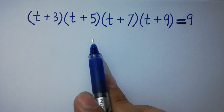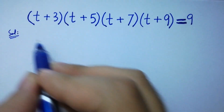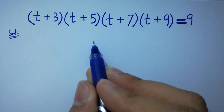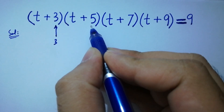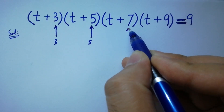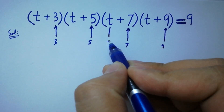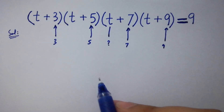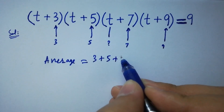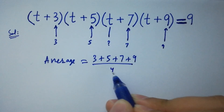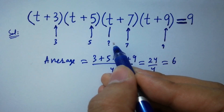I am going to solve this problem without expanding. This equation has an arithmetic sequence with common difference 2 — here we have 3, 5, 7, 9. To find t, we calculate the average: (3+5+7+9)/4 = 24/4 = 6. So the value of t is around negative 6.